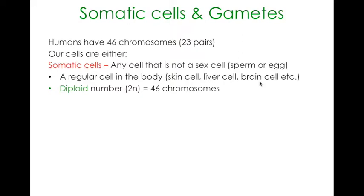Somatic cells have what we call a diploid number - diploid for 2 - and the shorthand for that is 2n, where n refers to the number of chromosomes. So 2n equals 46. We say that our somatic cells have a diploid number of chromosomes because they normally have a full set.